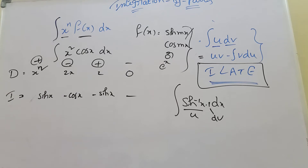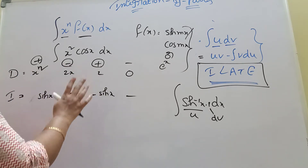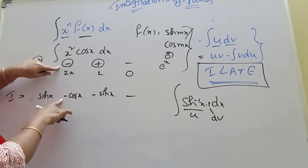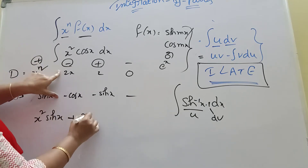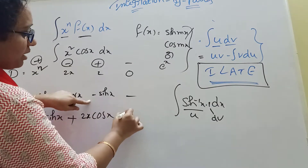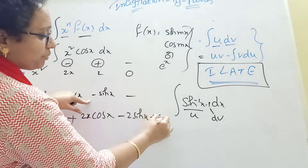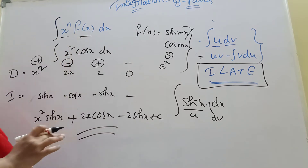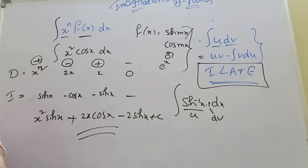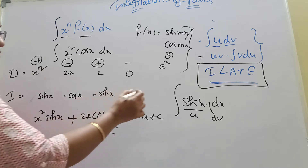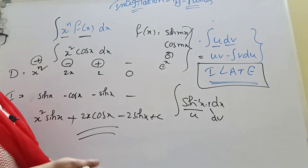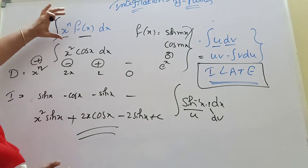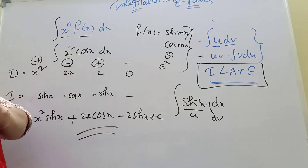Using the shortcut tabular method: we write x squared, then 2x, then 2, then 0 going down on the left. On the right we write cos x, sin x, minus cos x, minus sin x. We multiply diagonally with alternating signs: plus x squared into sin x, minus 2x into cos x, plus 2 into minus sin x. Then we take x squared and place it in the top, with e to the power x and inverse function in the arrangement.